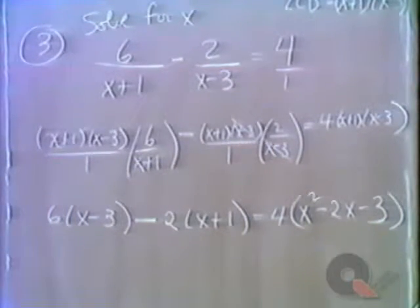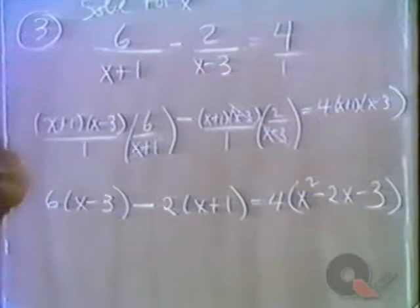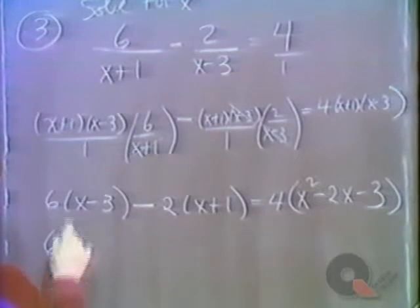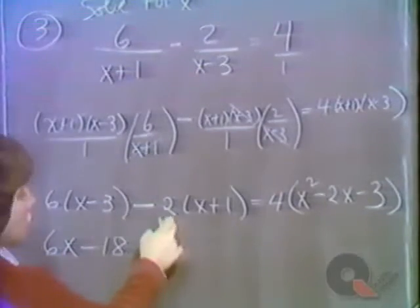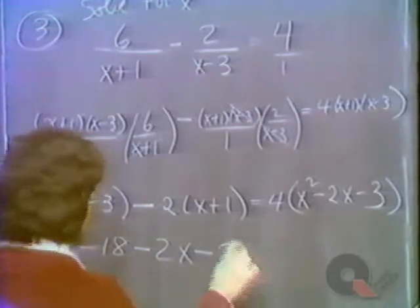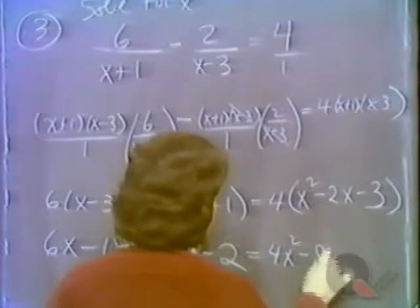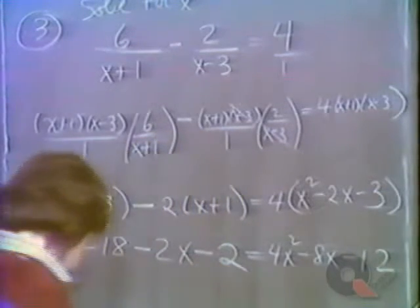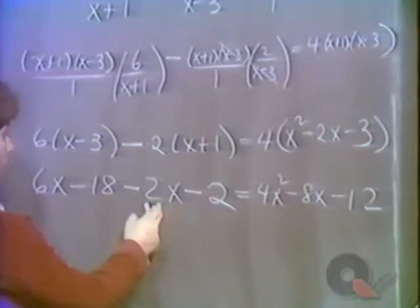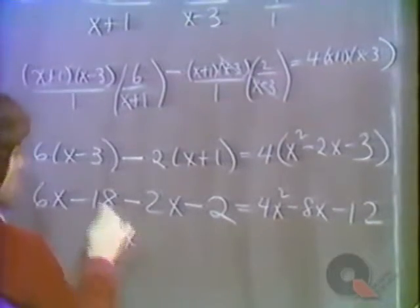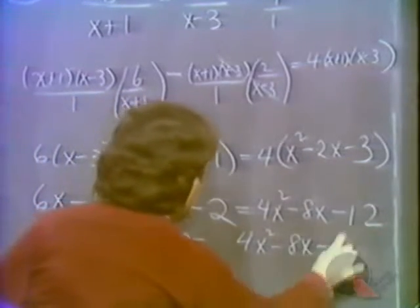We simplify this quadratic equation by distributing: 6 times x minus 3 gives 6x minus 18; distributing minus 2 gives minus 2x minus 2. On the right, distributing 4 gives 4x squared minus 8x minus 12. On the left, 6x minus 2x is 4x, and minus 18 minus 2 is minus 20. So we have 4x minus 20 equals 4x squared minus 8x minus 12.